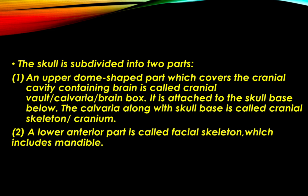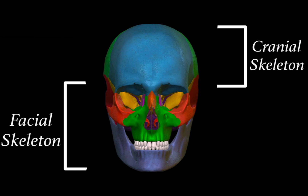The lower anterior part is called the facial skeleton, which includes the mandible. So the upper portion is the cranial skeleton and the lower one is the facial skeleton.